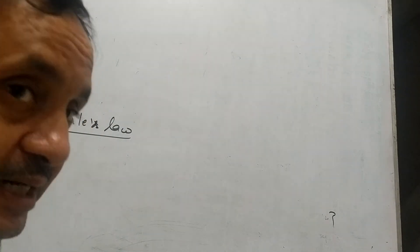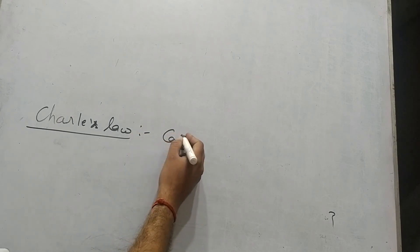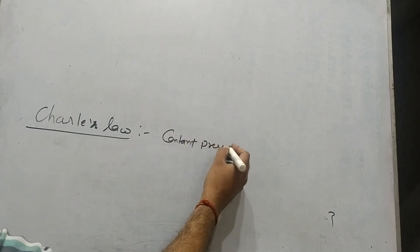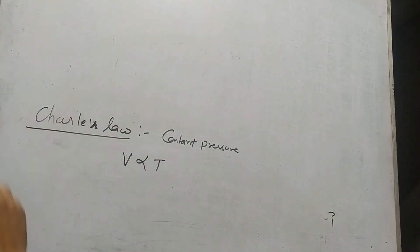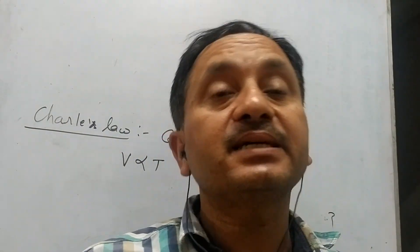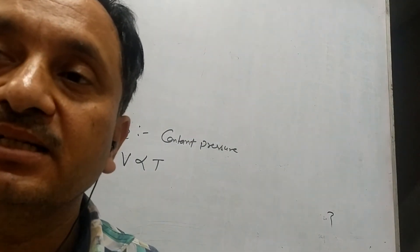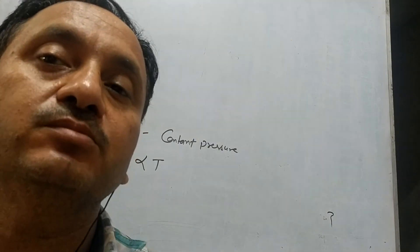According to Charles's law, at constant pressure, the volume of a gas is directly proportional to the absolute temperature of the gas — that is, the temperature in Kelvin. So as the temperature of the gas increases, the volume of the gas also increases.